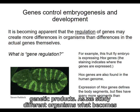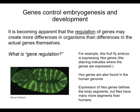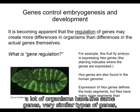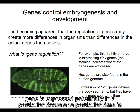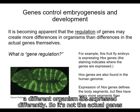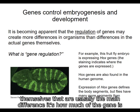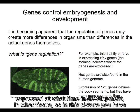As we study different organisms, what becomes apparent is that a lot of organisms have the same genes, or very similar types of genes, and what's different between them is how the genes are regulated — meaning that one gene is expressed potentially in a particular tissue at a particular time, in a particular amount, and maybe in a different organism it's expressed differently. So it's not the actual genes themselves that are usually the main difference; it's how much of the gene is expressed, at what time in development, and in what tissue.